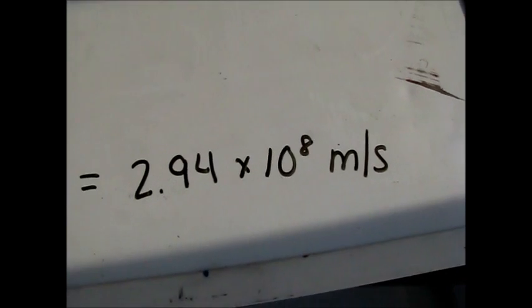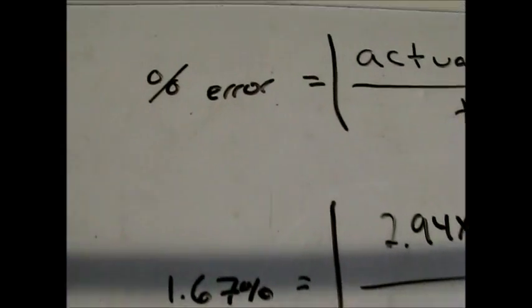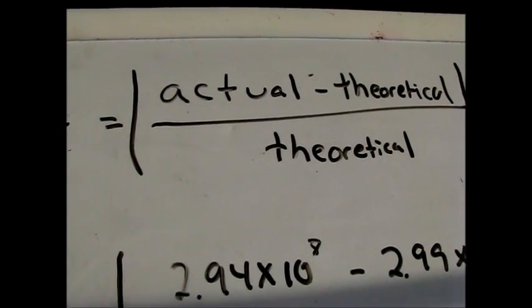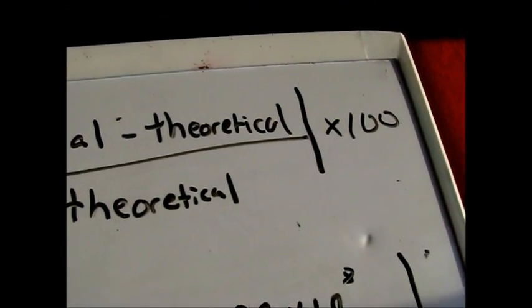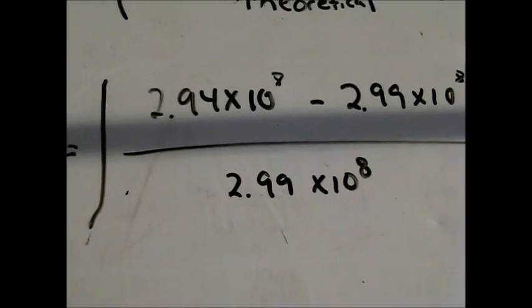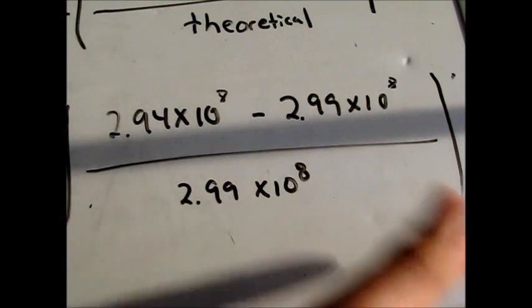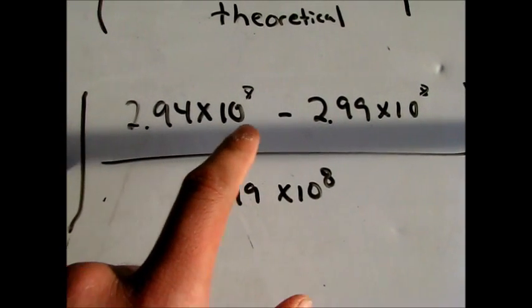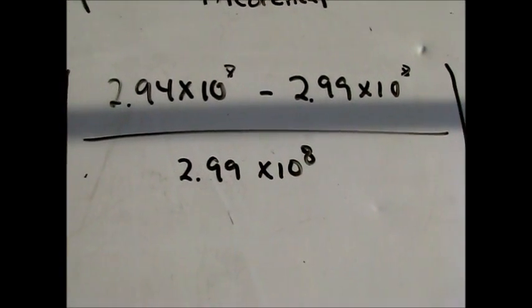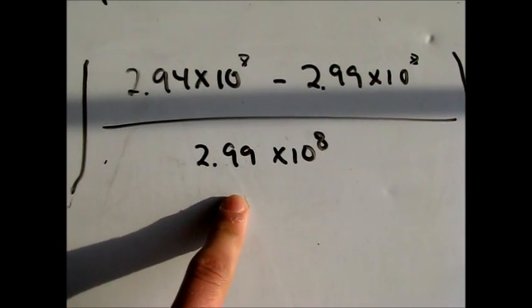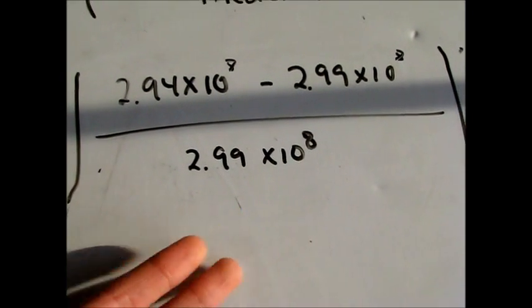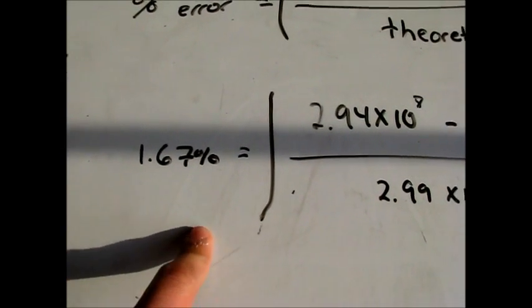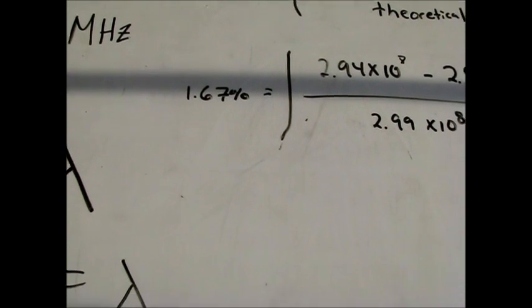We're going to find out percent error now. The formula for percent error is the absolute value of actual minus theoretical over theoretical times 100. In our case, our theoretical is 2.99 times 10 to the 8th meters per second, which is the speed of light, and our actual is 2.94 times 10 to the 8th, which is what we got, over the theoretical, which is 2.99 times 10 to the 8th. What we got was 1.67 percent error, so basically it was a really good experiment.